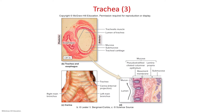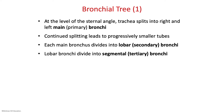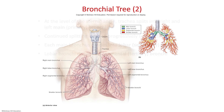The trachea splits at a place called the carina into a right and left main bronchi. At the level of the sternal angle, your trachea splits into primary bronchi, which are the first splitting of the trachea. Continued splitting leads to progressively smaller tubes: secondary and tertiary bronchi. You can see the larynx, the trachea coming down, right and left primary bronchi, then lobar branches — which are secondary bronchi — and segmental branches, which are tertiary bronchi. Basically, your trachea splits into smaller and smaller pieces to get air to every part of the lungs.